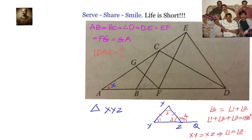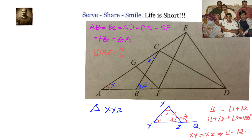We can solve this in many ways; here's one approach. Let angle DAE equal X. Take triangle ABC: AB equals BC, so angle A equals angle C — let both equal X. The exterior angle CBD is therefore X plus X, which equals 2X.